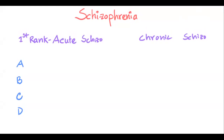What are the features of acute schizophrenia and what are the features of chronic schizophrenia? The acute schizophrenia features are also known as the first rank symptoms of Schneider — the Schneider first rank symptoms.